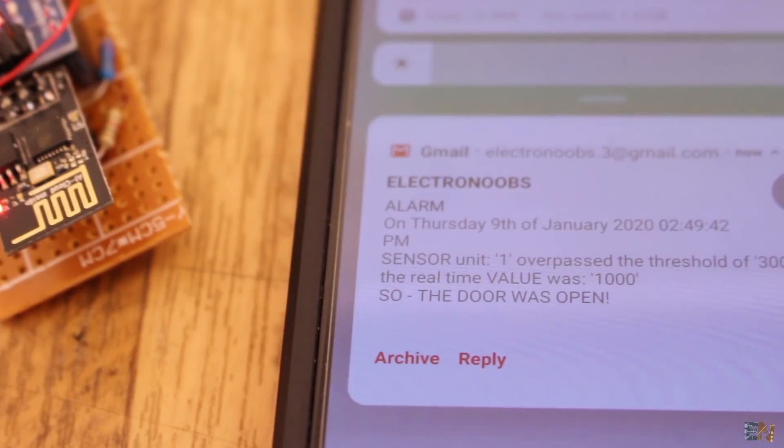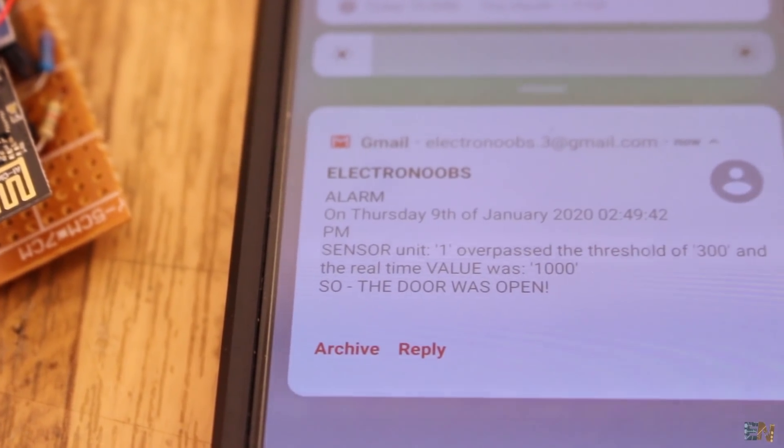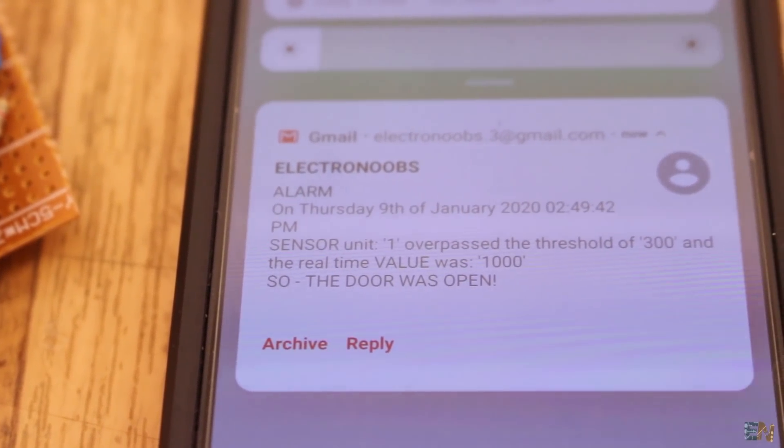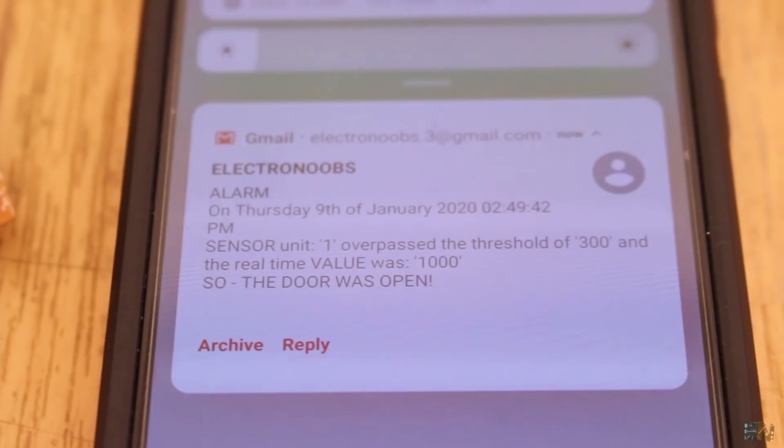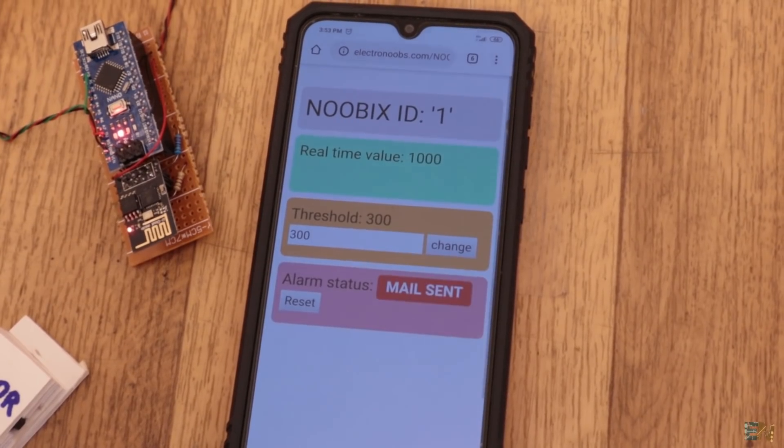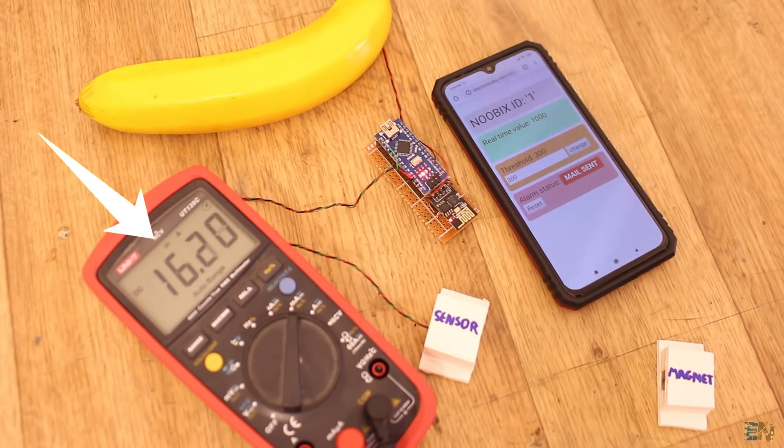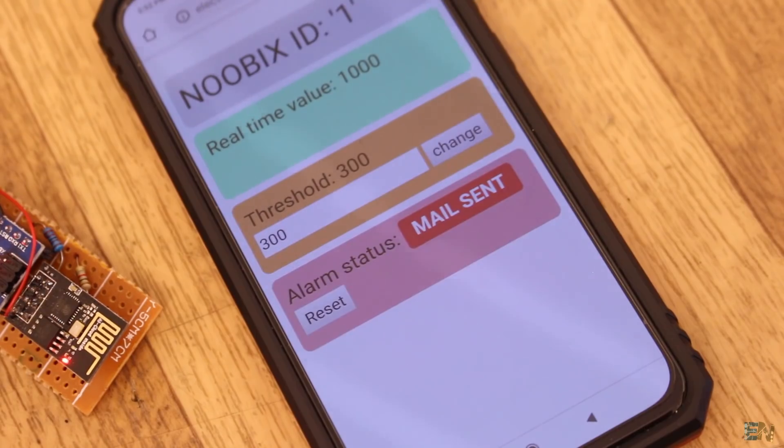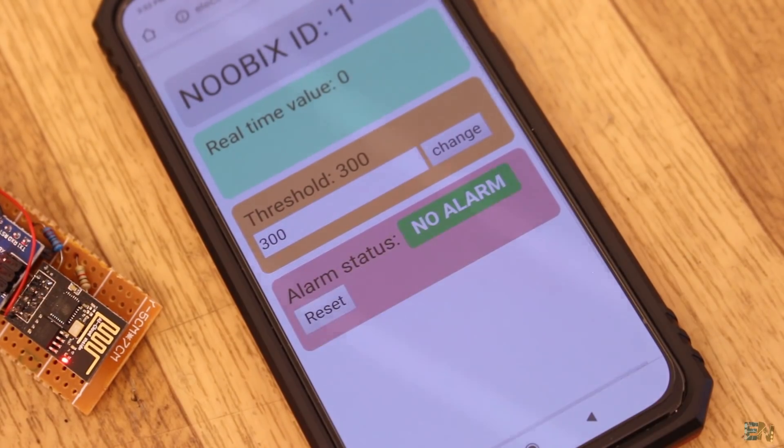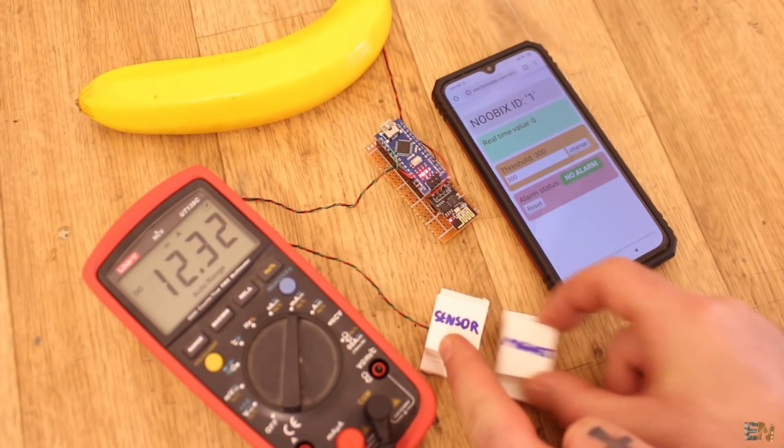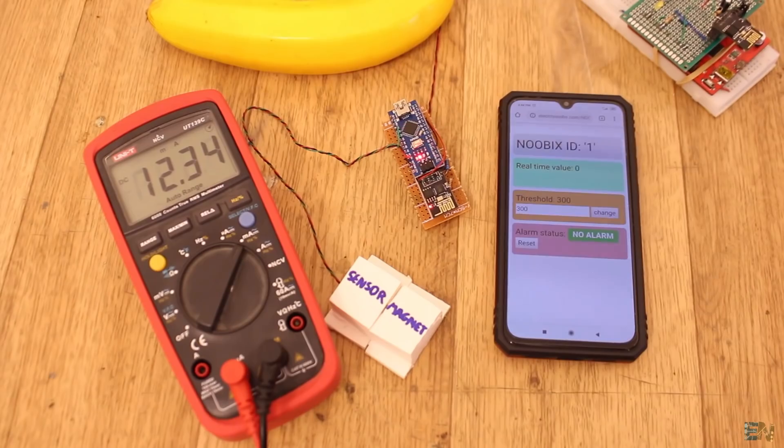In the mail I receive, I can see the day and time, the threshold value and the detected value from the sensor, so I can know when the door was open. Then as you can see, the Arduino and ESP will go back to sleep mode and the current value is low once again. Now I can go and reset the alarm and that will also place the real value back to 0. If I open the door again, this same process will repeat once again.